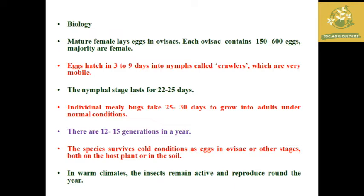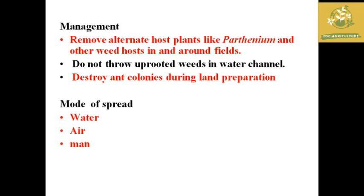The insects remain active in warmer climates and reproduce throughout the year. Immediate measures must be taken once mealybug infestations are observed. Management practices include removal of alternative host plants and weeds like parthenium from the field and surrounding areas.